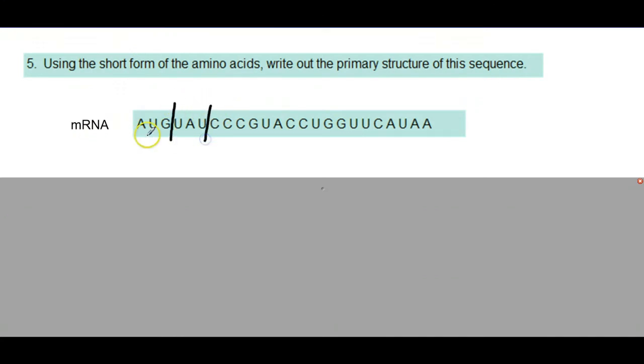If we recall, the ribosome is going to read along the mRNA transcript until it reaches what we call a start codon. And if you look, AUG is our start codon. This is something you need to remember. But you'll have the genetic code chart with you, so if you forget, you can look at what that is. There's just one start codon.